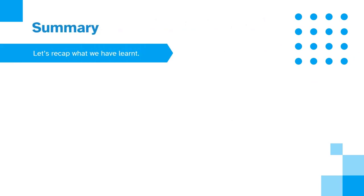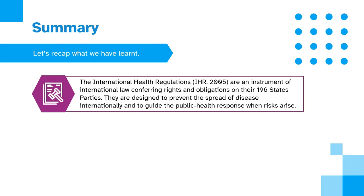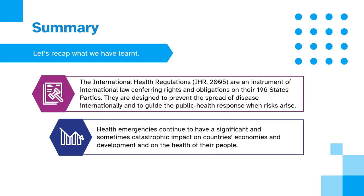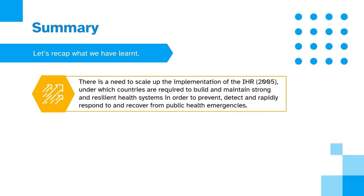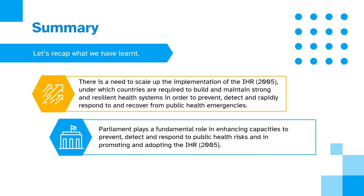Let's recap what we have learnt. The International Health Regulations are an instrument of international law conferring rights and obligations on their 196 states parties, designed to prevent the spread of disease internationally and to guide the public health response when risks arise. Health emergencies continue to have a significant and sometimes catastrophic impact on countries' economies, development and the health of their people. There is a need to scale up the implementation of the IHR, under which countries are required to build and maintain strong and resilient health systems in order to prevent, detect and rapidly respond to and recover from public health emergencies. Parliament plays a fundamental role in enhancing capacities to prevent, detect and respond to public health risks and in promoting and adopting the IHR.